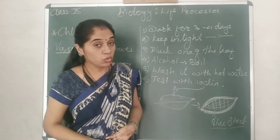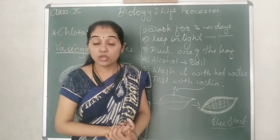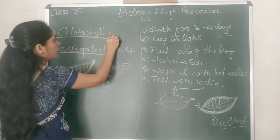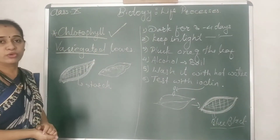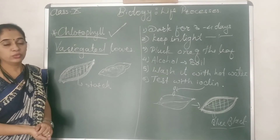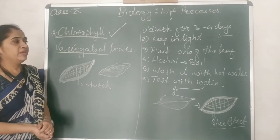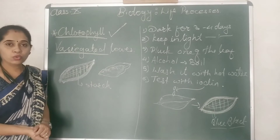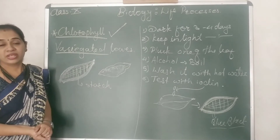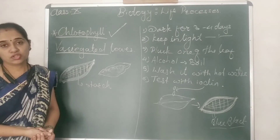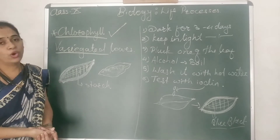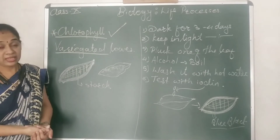So from this experiment we have concluded that chlorophyll is one of the very essential components for the process of photosynthesis. We can say that without chlorophyll pigments or without chloroplast, the photosynthesis reactions — ultimately the process of production of glucose by the plant — is not possible.